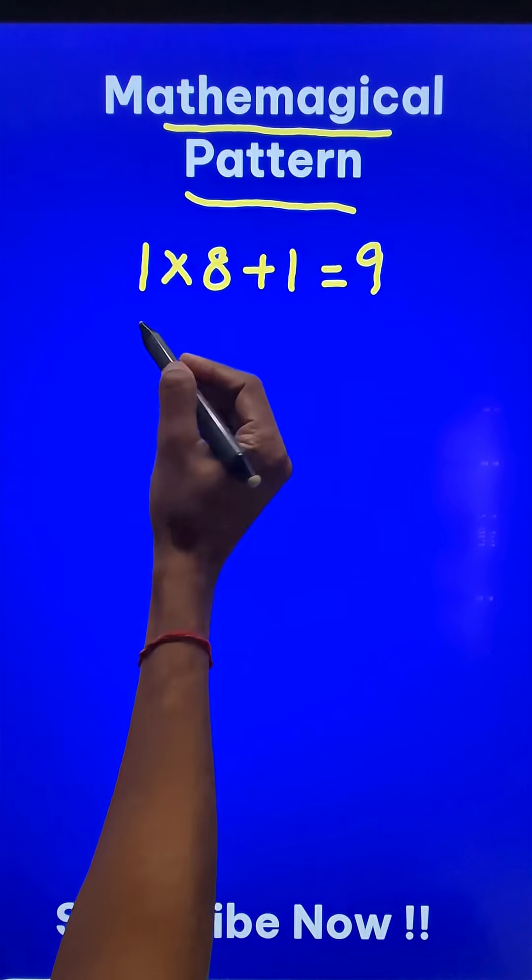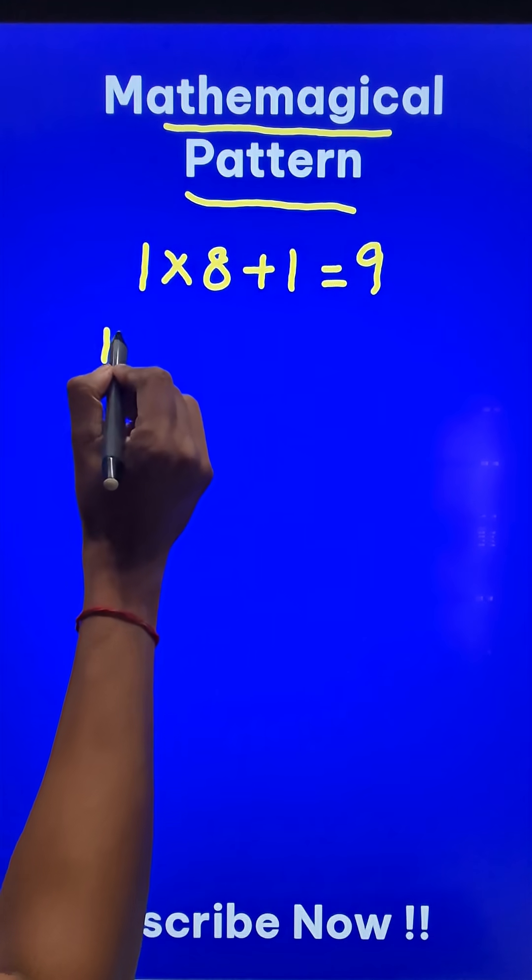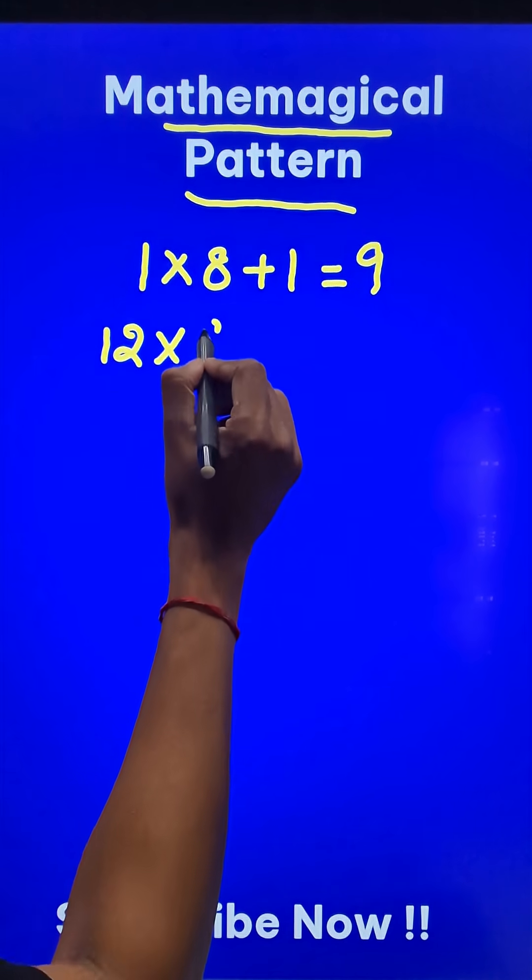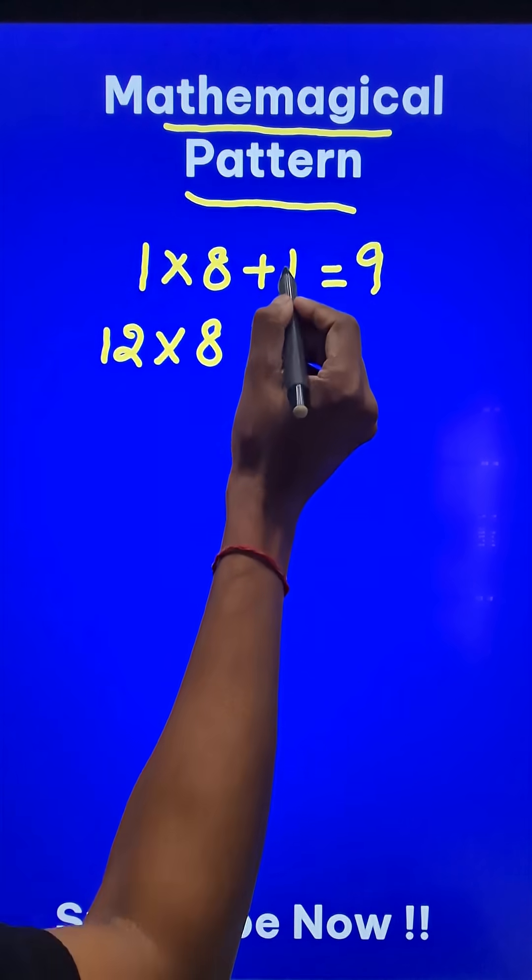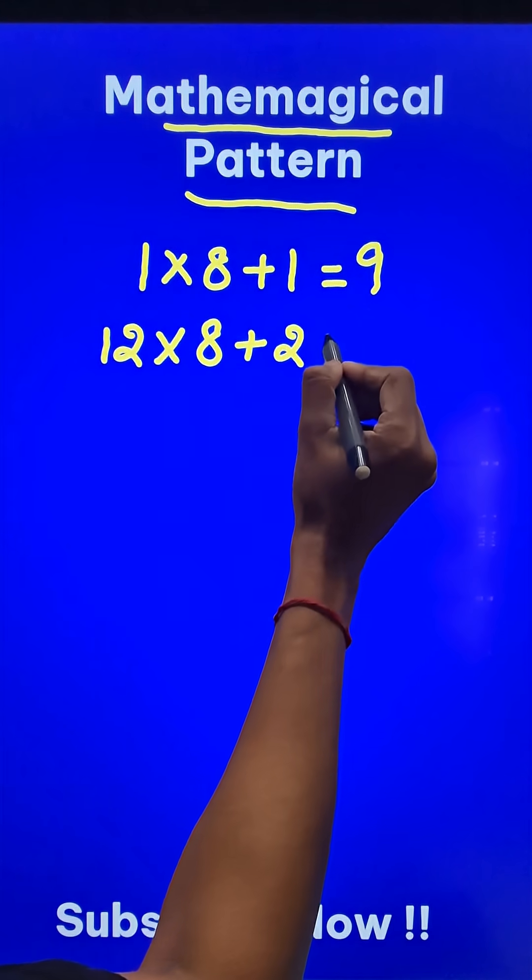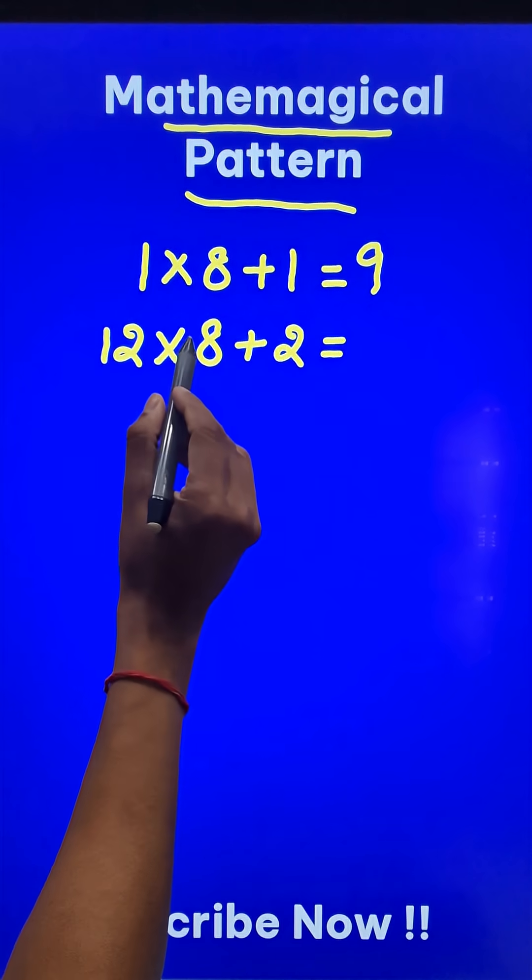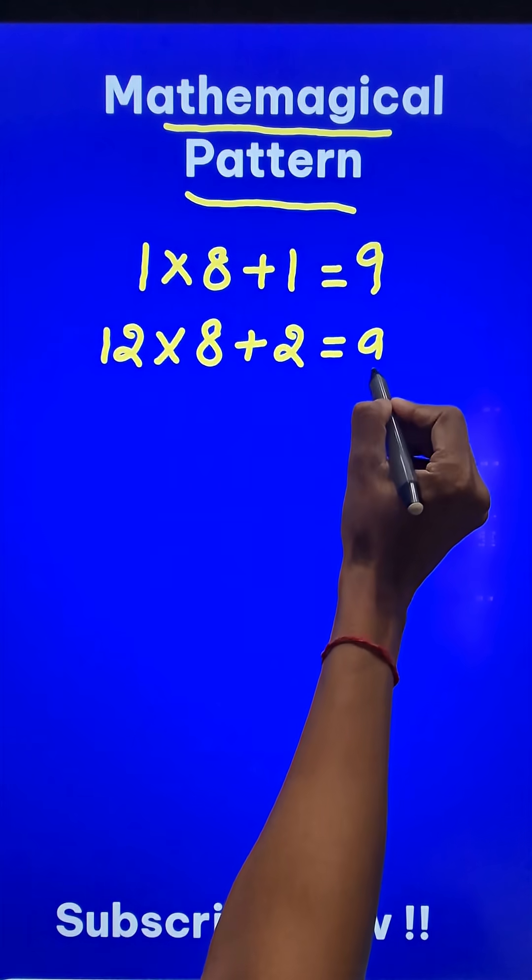And see what happens when we form a pattern. Now the 1 becomes 12. You multiply by 8 again and now in place of 1, you add 2. So you can see 12 times 8 is 96 plus 2, equals 98.